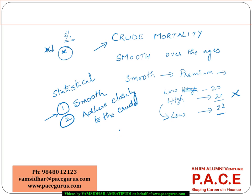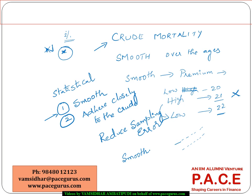Reduce the sampling error to as large an extent as possible, and see that as the ages are increasing, the mortality also keeps increasing. But always remember: when I try to produce extremely smooth data — smooth as a pattern with age — adherence to the reality may be a difficulty. And the more I am adhering to reality, the smoothness becomes a difficulty.